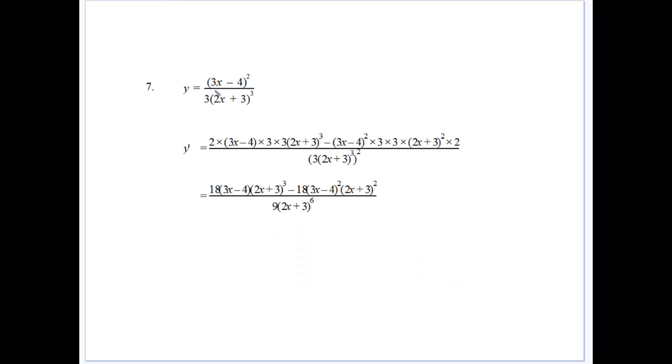3x minus 4 all squared over 3 outside of 2x plus 3 to the power of 3. Again, take your denominator and square it. So 3 will square to give you 9, 2x plus 3 all cubed gives us all cubed, then squared gives us to the power of 6.